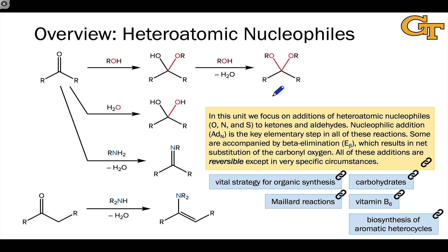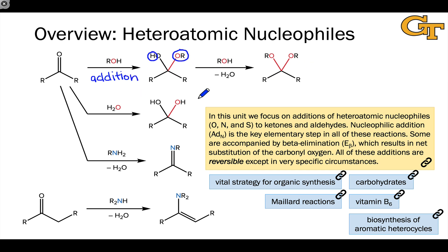I wanted to start by giving an overview of this unit and the heteroatomic nucleophiles we'll look at. When an alcohol engages with a carbonyl compound, we get addition of the alcohol across the carbonyl group, with the hydrogen going to oxygen and the nucleophilic oxygen linked to the carbonyl carbon. This amounts to an addition process. The intermediate undergoes further reactivity: the OH group in this intermediate is substituted by the alcohol to place a second alkoxy group linked to the former carbonyl carbon — and this process is a substitution. We'll talk about hemiacetals, the middle structure, and acetals over the next few videos.